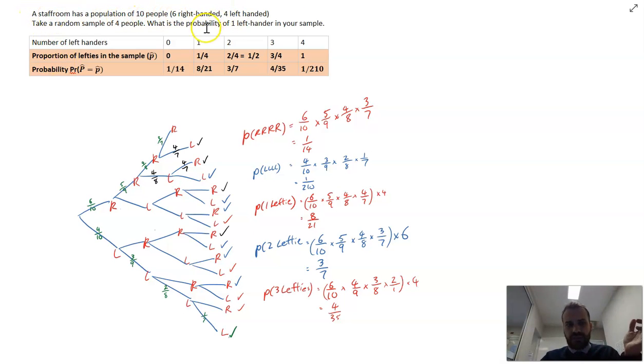The staff room has a population of 10 people, 6 right-handed, 4 left-handed. Take a random sample of 4 people. And you can do that with a tree diagram without replacement.